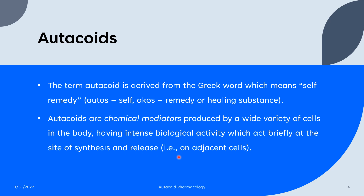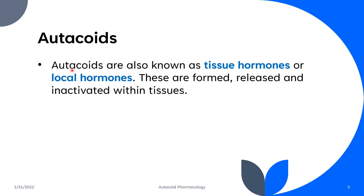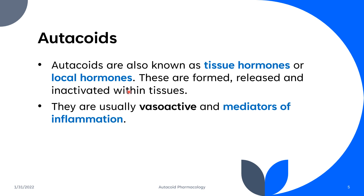Autacoids can act on adjacent cells. They are also known as tissue hormones or local hormones — they are formed, released, and inactivated within tissues. They are usually vasoactive, meaning they affect the blood vessels. They are also considered to be mediators of inflammation.